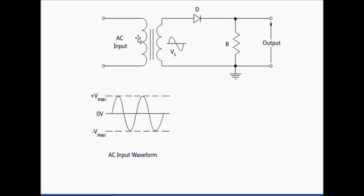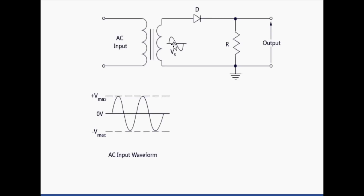When we apply AC input to the diode, first is the positive half cycle and second is the negative half cycle. This is the diode — the positive portion and the negative side. In the case of the first half cycle, when it enters the diode in the forward bias, current passes through the diode. But in the reverse bias, in the negative half cycle, it is reverse biased.